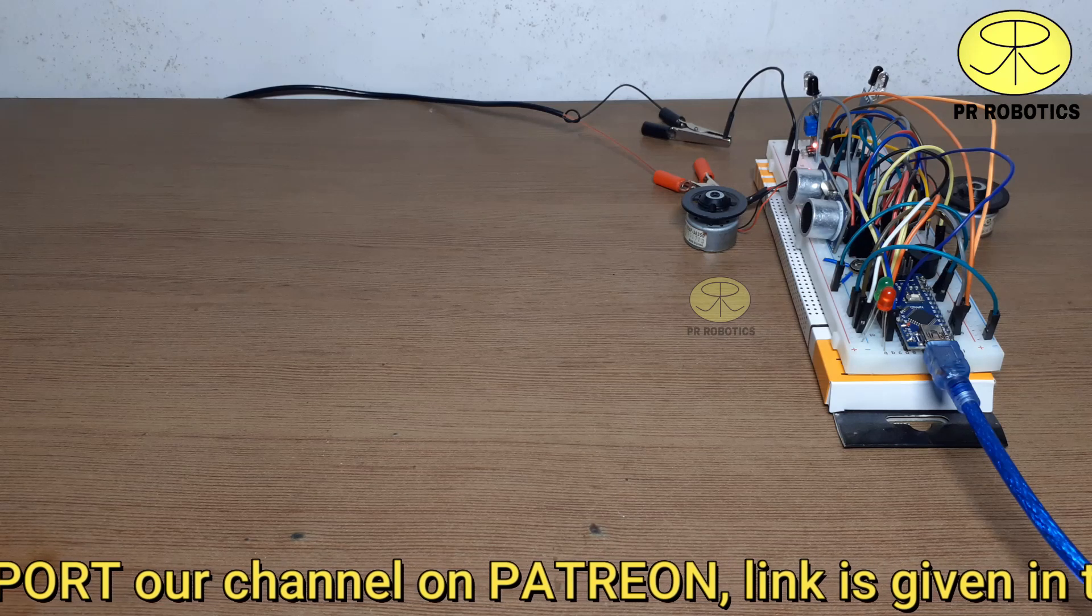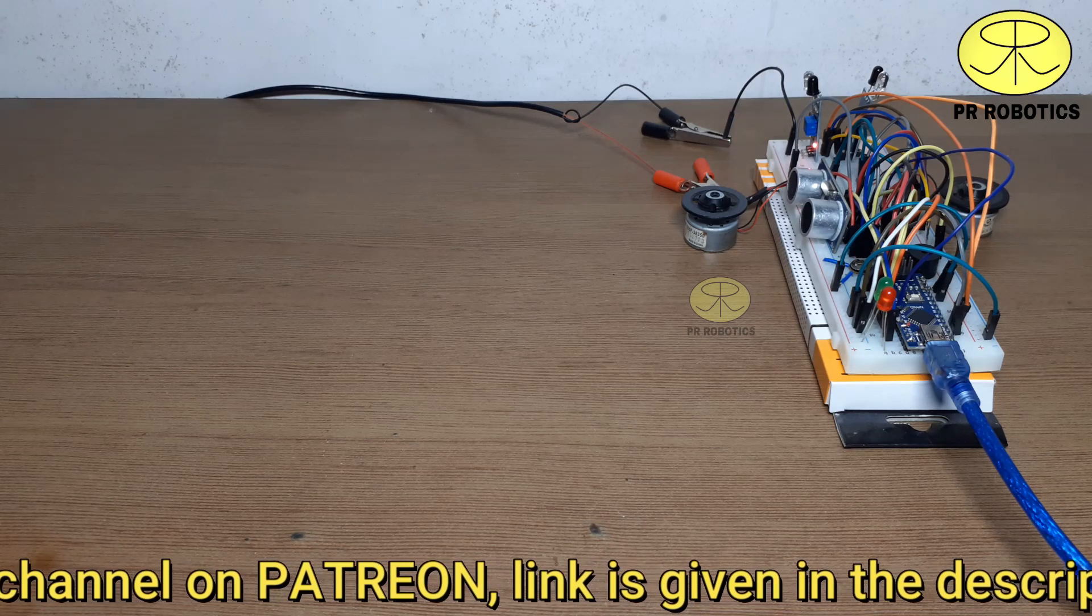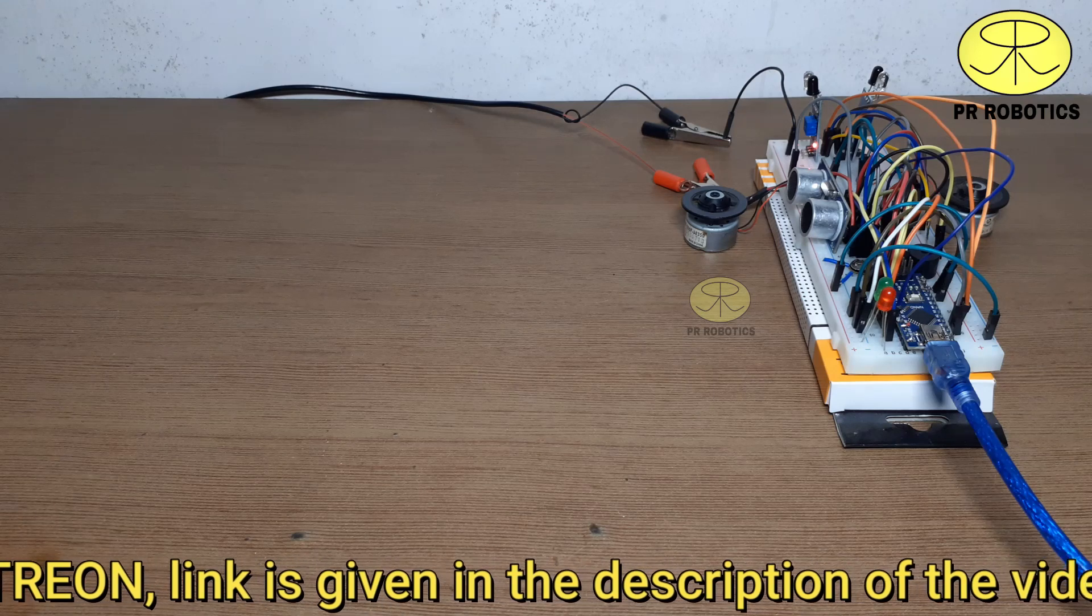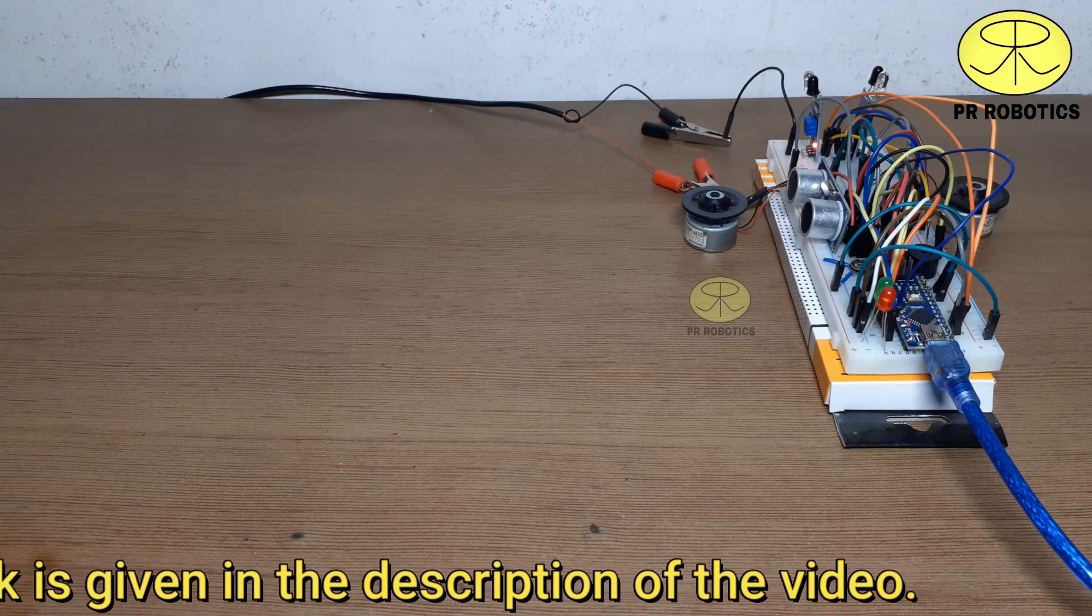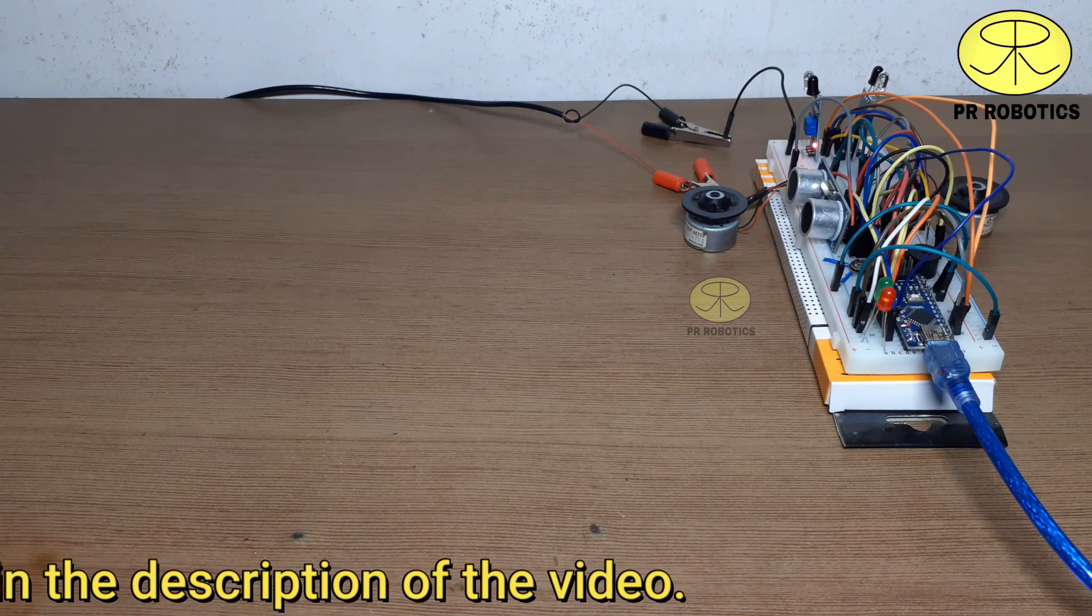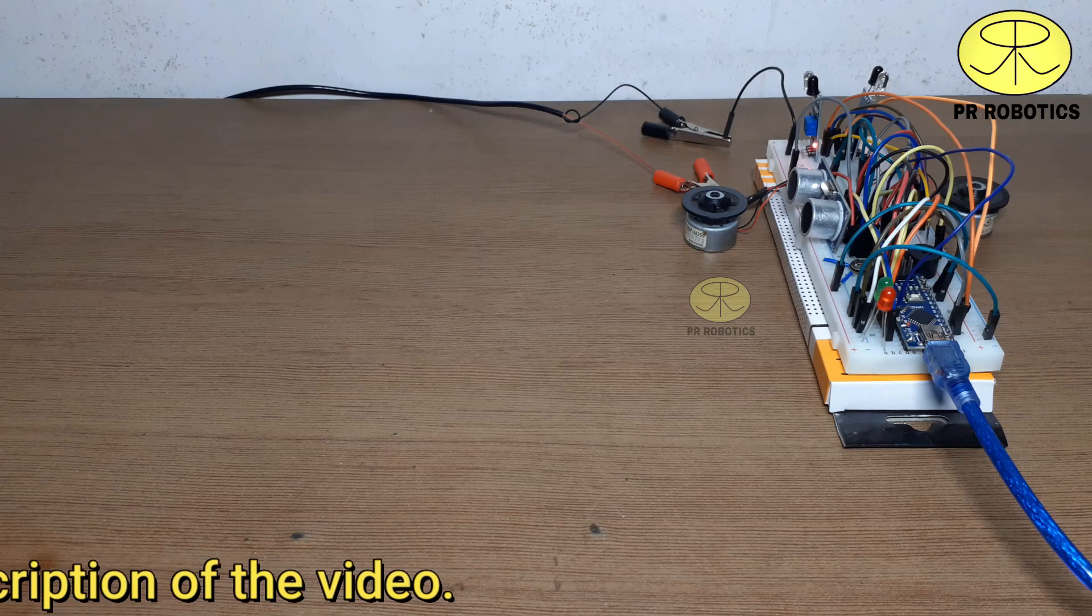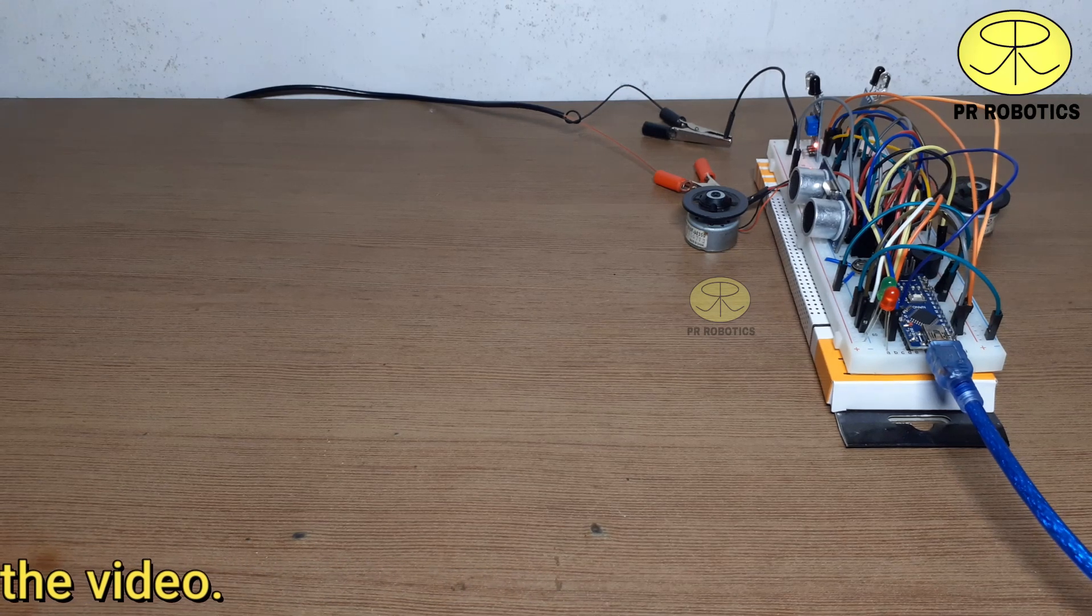If by mistake the robot is crashed with anything or gets displaced from the line, it will immediately stop and the buzzer will start buzzing, indicating the need for help to place it back on the black line. Now let's have a quick demonstration.